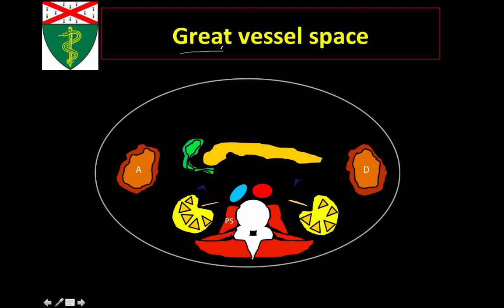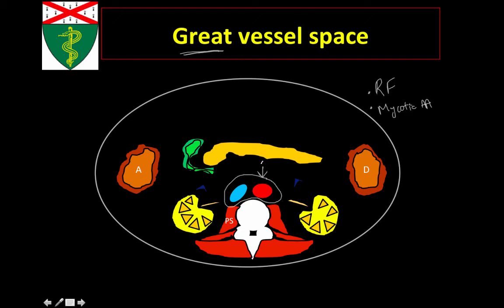Let's move on to the great vessel space. This is part of the retroperitoneum — a space around the central vessels of the IVC and the aorta — in which certain pathological processes can start, so it's important to evaluate on every case. Things like retroperitoneal fibrosis or mycotic aortic aneurysms can start in this location. Importantly, this space is in contiguity with the posterior mediastinum, so a process in the posterior mediastinum can travel into the abdomen through this space, and vice versa. Other than the aorta and IVC, there will be a few small lymph nodes, small vessels, and some fat in this location.